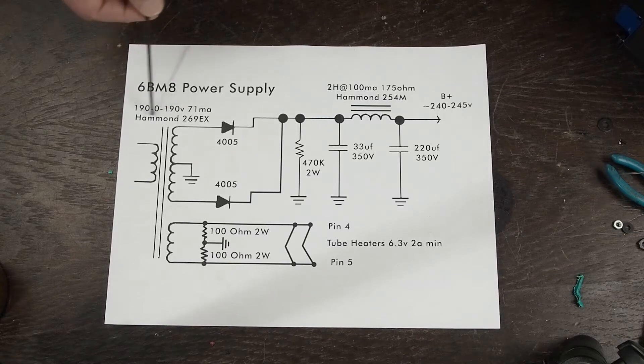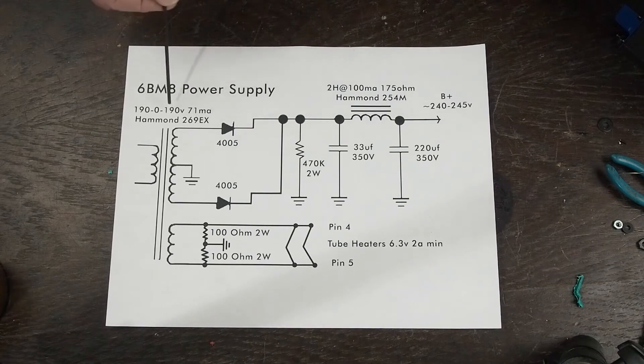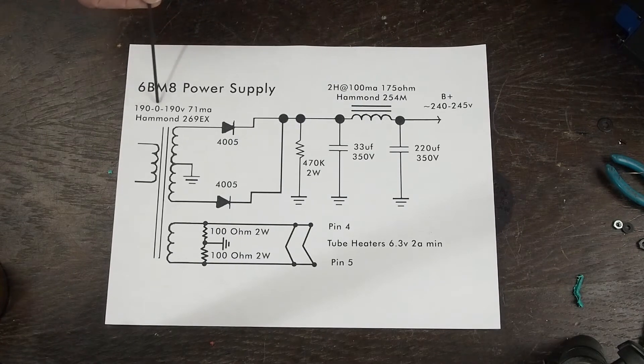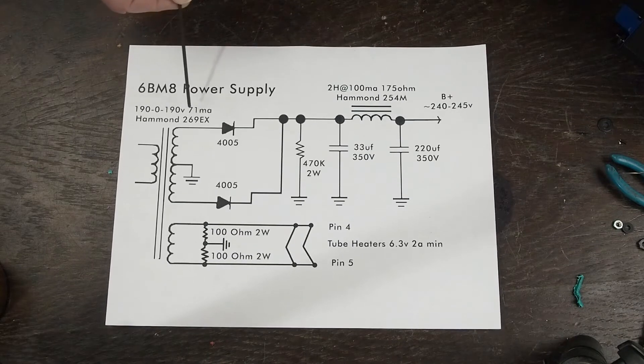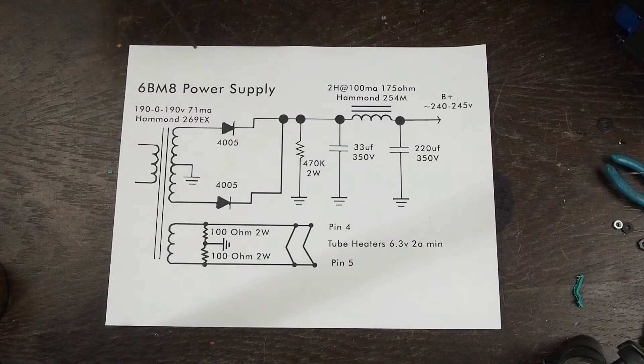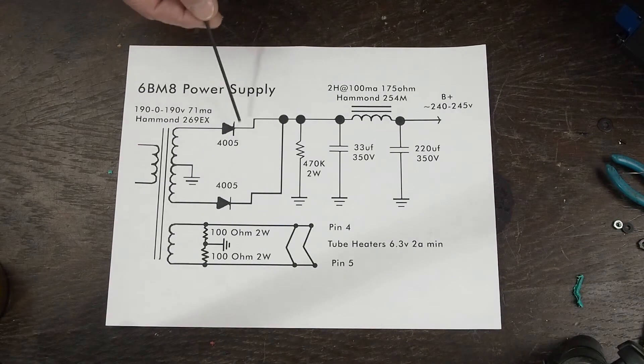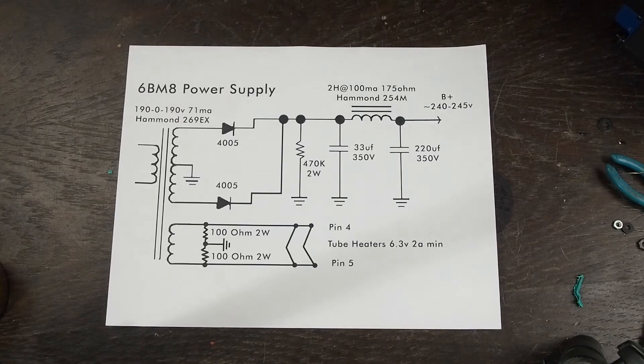So we're using this Hammond 269EX center tap transformer, which has 190, 0, 190 volts at 71 milliamps. And we're wiring it up as a full wave rectifier, similar to what you would do or actually exactly like you would do if we were using a tube rectifier. But we're going to use silicon diodes instead to keep the size small and not have to add an extra tube.